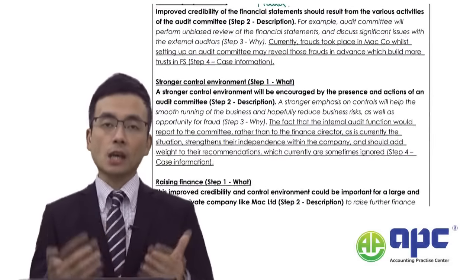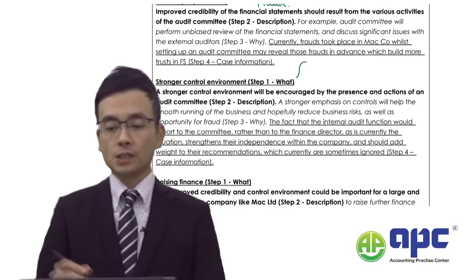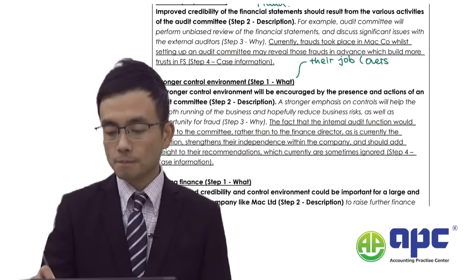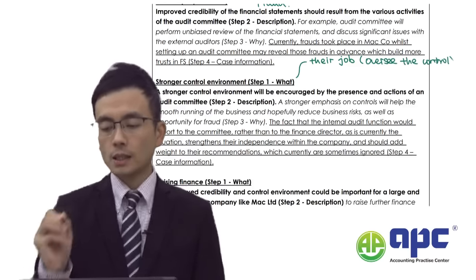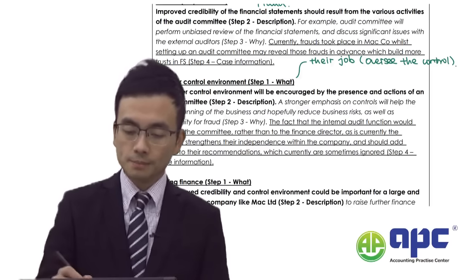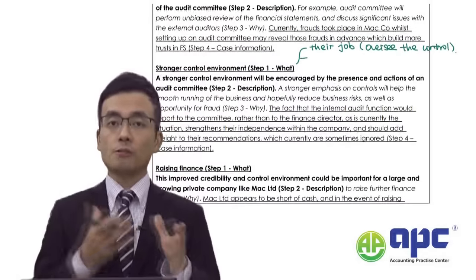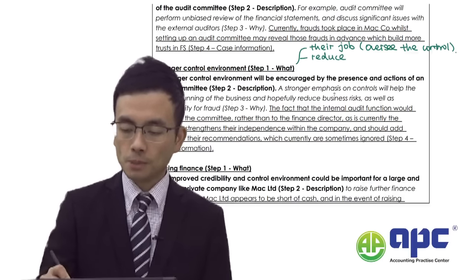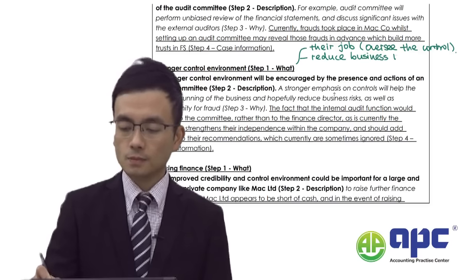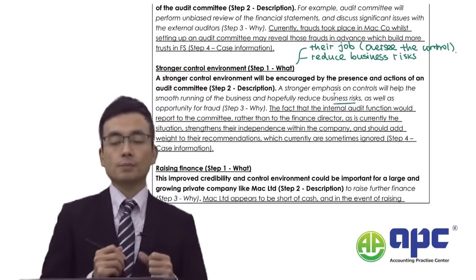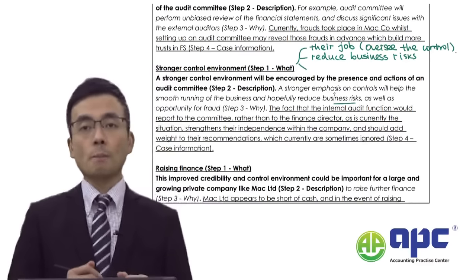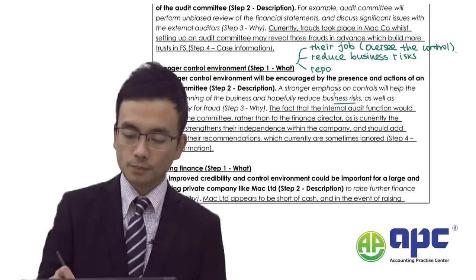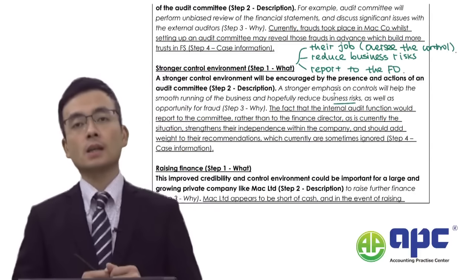The second benefit is building a stronger control environment. It's the audit committee's job to oversee controls in MACL. A better control environment, especially in a family-based company, will stop errors and fraudulent transactions, reducing business risks. Currently in MACL, the internal audit team reports directly to the finance director, which is not appropriate - an audit committee would address this governance weakness.